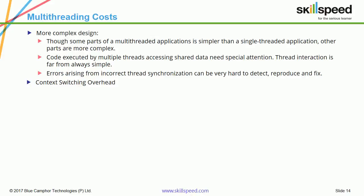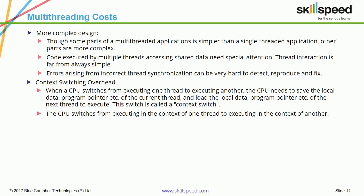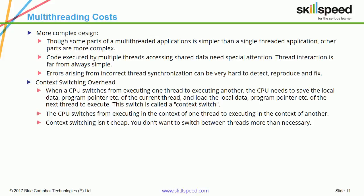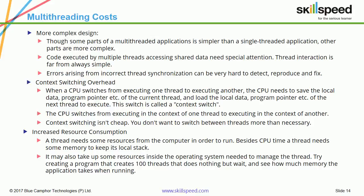The next disadvantage is context switching overhead. When a CPU switches from one thread to another, it needs to save the local data, program pointers, etc. of the current thread and load those of the next thread to execute — this switch is called a context switch. Context switching is not cheap; you don't want to switch between threads more than necessary. The third disadvantage is increased resource consumption: a thread needs CPU time and some memory to keep its local stack, and may also take up resources inside the OS needed to manage the thread.